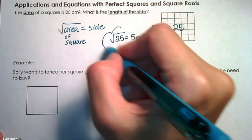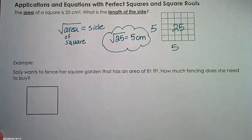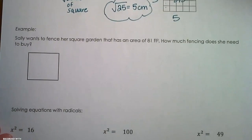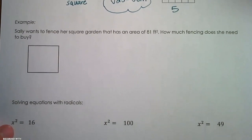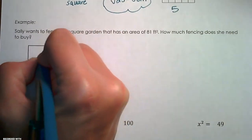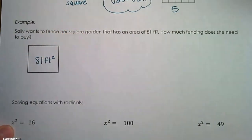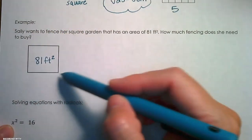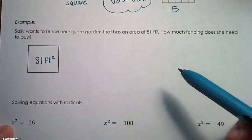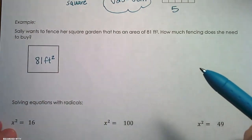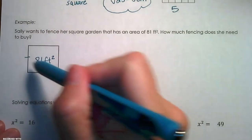Let's take a look at the next example. Sally wants to fence her square garden that has an area of 81 square feet. How much fencing does she need to buy? So we're looking to find the perimeter, but in order to know the perimeter, we have to know what one of the sides is. So we know that it's square, so all the sides are congruent.